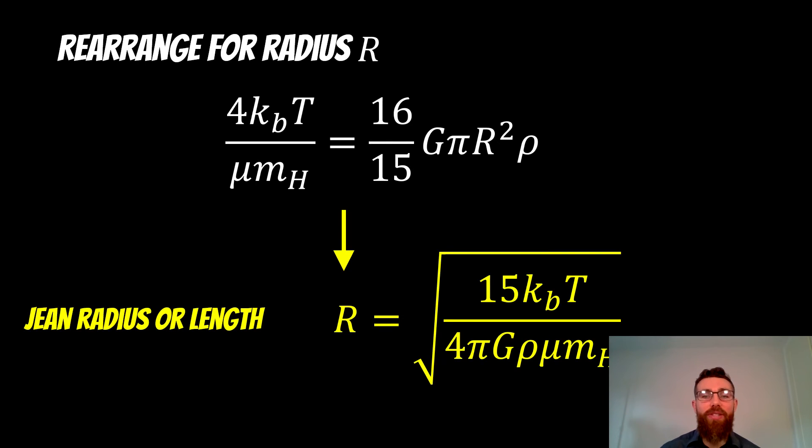Now we can rearrange for that R. That is our Jeans radius or our Jeans length. Now we've got an expression that's going to tell us the radius at which the pressures and the gravitational potential energies are going to balance one another out. It relates to the temperature of that gas, the density and also the mass, but they are going to be assumed to be constant. So it's predominantly down to the temperature and the density.